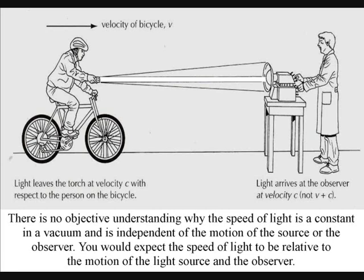In physics there is the paradox of wave-particle duality and also there is no understanding of why the speed of light is a universal constant independent of the motion of the source or the observer.